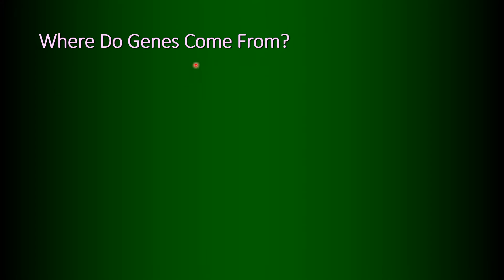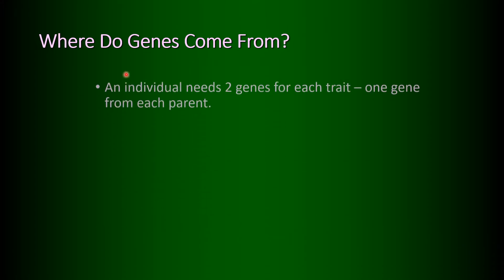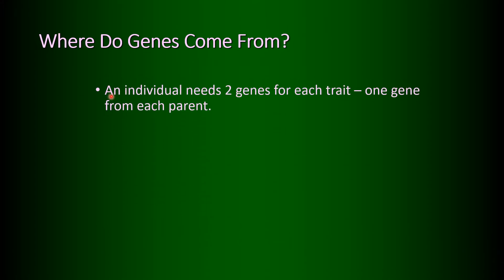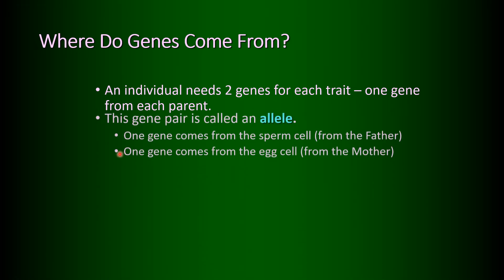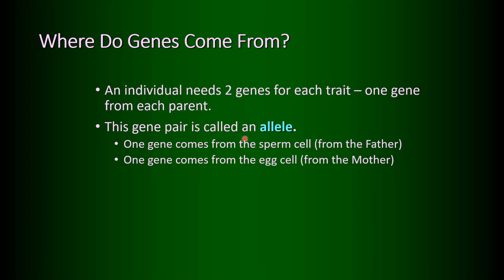Where do genes come from? An individual needs two genes for each trait — one gene from each parent. This gene pair is called an allele. One gene comes from the sperm cell from the father, and one gene comes from the egg cell from the mother.